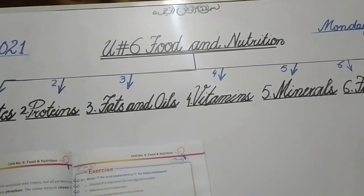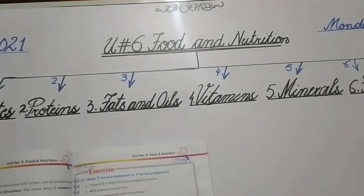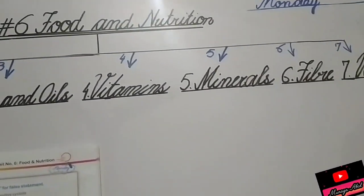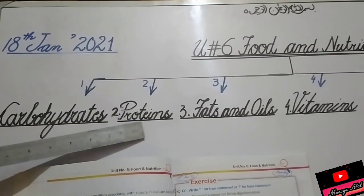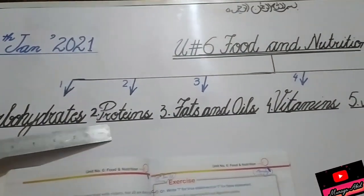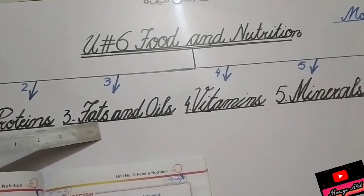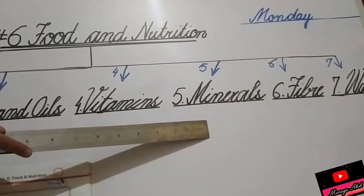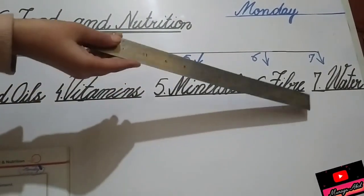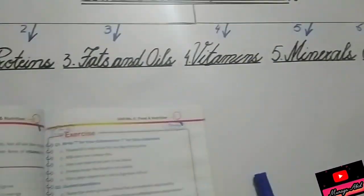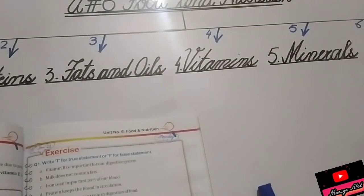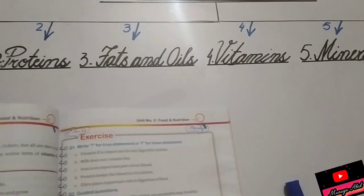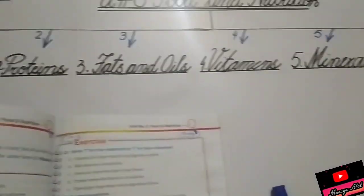Food is of seven types. Number one is carbohydrates, second group is proteins, third group is fats and oils, fourth group is vitamins, fifth group is minerals, sixth group is fiber, and the seventh group is water. We have studied them in detail with pictures — only the diseases caused by deficiency are left.